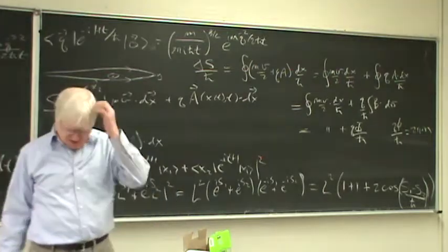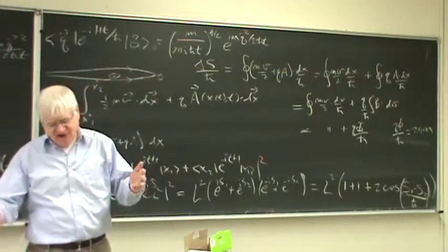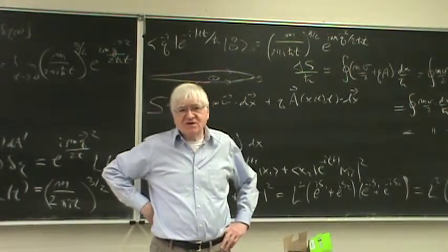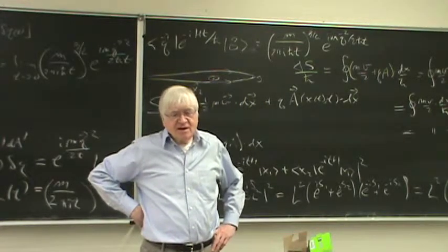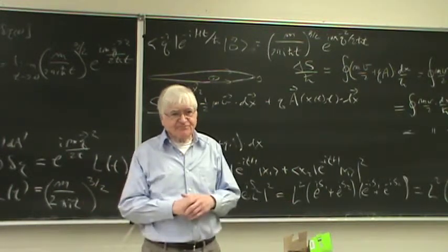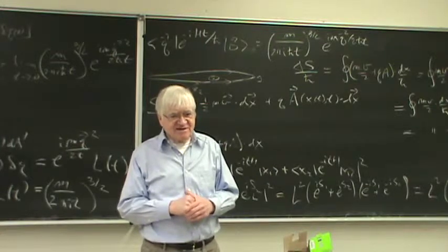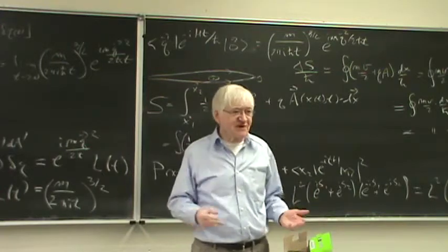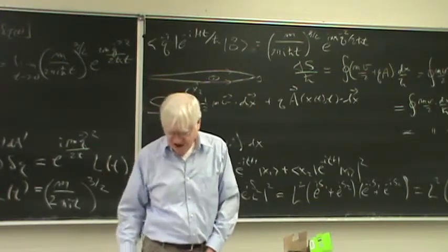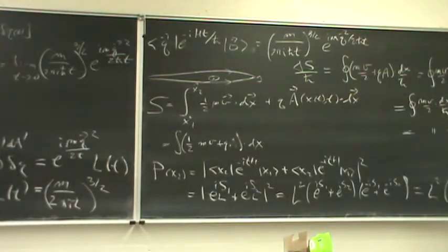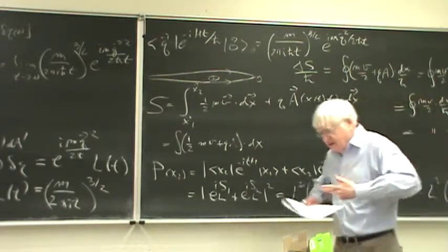By the way, Feynman — I wasn't there, but I heard this as a story and I think it's reliable — he one year decided he was going to teach quantum mechanics entirely in terms of path integrals. And after about two weeks he said, well, path integrals are great for some things, but not for everything. So he went back to the standard way of doing quantum mechanics. That's the nature of path integrals — they're very good for some things, not so good for other things, and you really need both approaches.